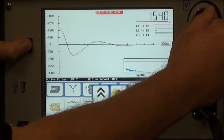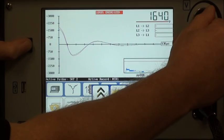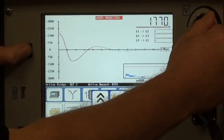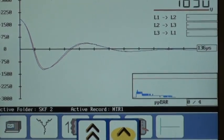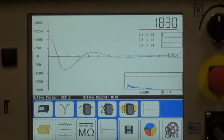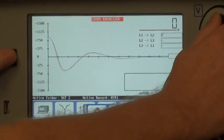As you can see in this instance, the values are very low. Once we reach our target voltage, we release the button, change the lead to the next, and then activate the test again.